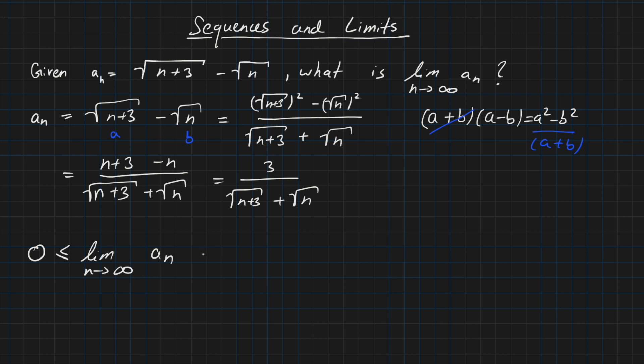and this is exactly the limit where n tends to infinity of this term here. So then we have 3 over root of n plus 3 plus root of n, and then we can estimate it to something bigger.